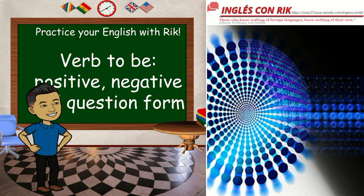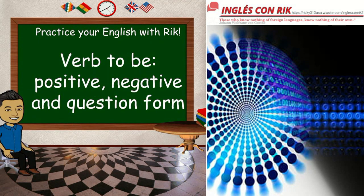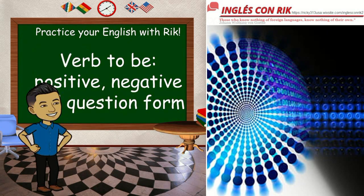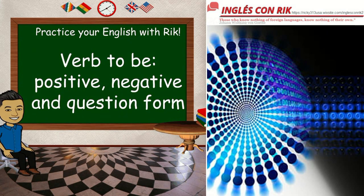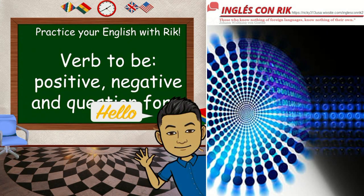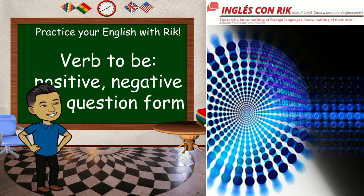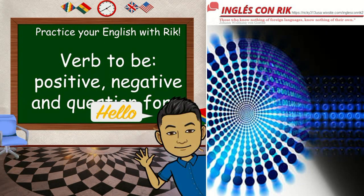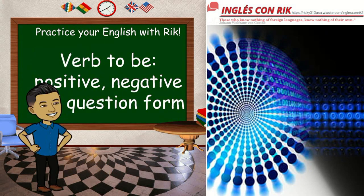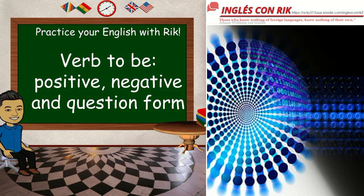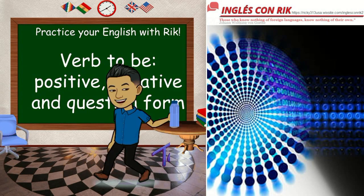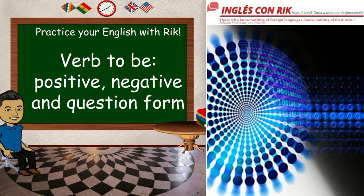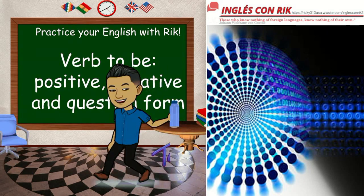Hello everybody, welcome to Practice Your English with Rick. Today we are going to work the simple tense of verb to be — the positive, negative and question form. Bienvenidos a todos a Practica tu Inglés con Rick. Hoy vamos a trabajar el presente simple del verbo to be, su forma positiva, negativa e interrogativa.